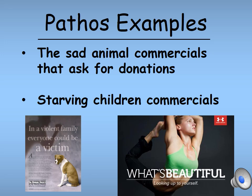Here are some examples of advertisements that use pathos. The first goes back to those sad animal commercials — an advertisement from the Humane Society that says 'In a violent family, anyone could be a victim,' with a picture of a sad dog. It's playing on your emotions, trying to make you feel a certain way so you'll be more inclined to support the Humane Society or go adopt a sheltered animal — making you feel like your heart is breaking so you'd be more willing to buy into their cause.